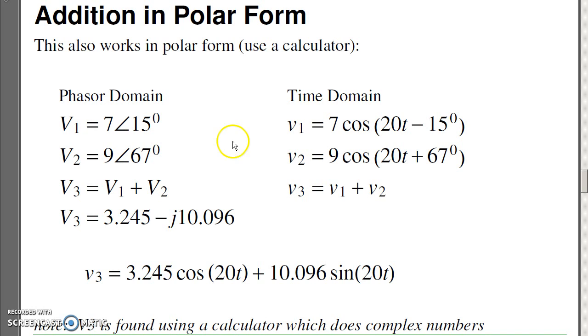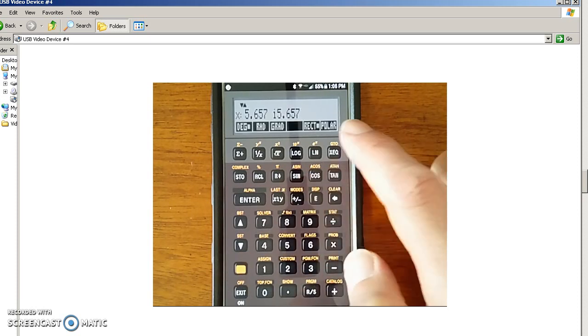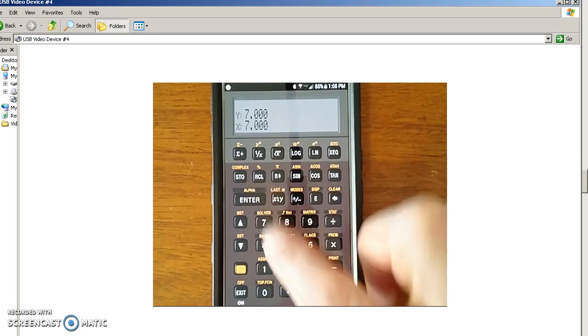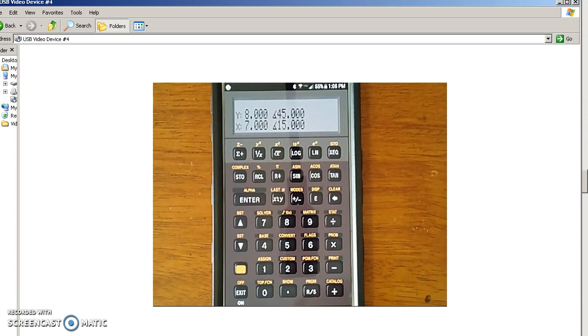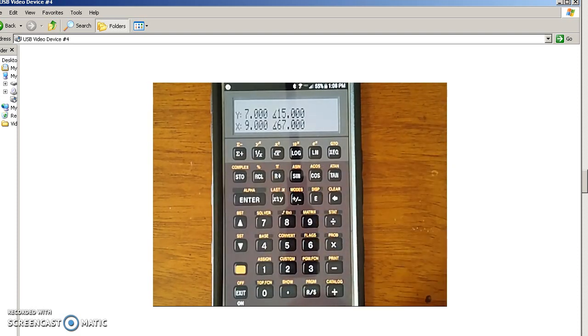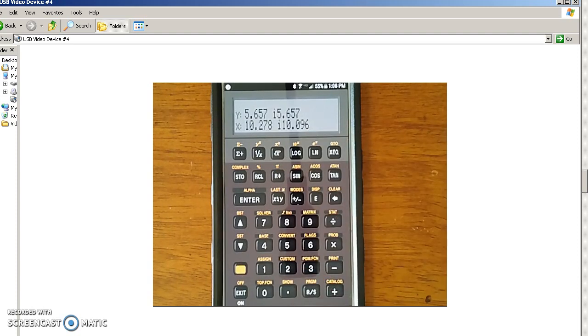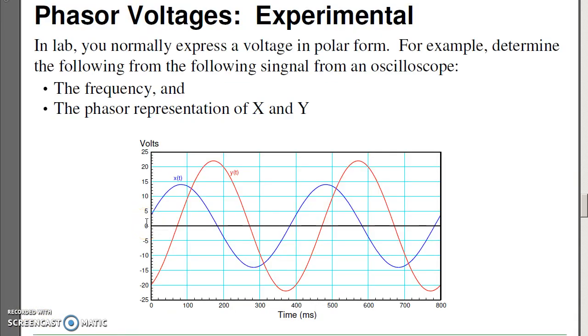It also works in polar form. In polar form, I would add 7 at minus 15 degrees plus 9 at 67 degrees. Add them together, you get a complex number. To illustrate, let's use an HP calculator. To input the number 7 at 15 degrees, I'll go to polar mode. I'll now enter 7, enter 15, there's 7 at 15 degrees. Add to it 9 at 67 degrees. 9, enter 67. And now add. There's your answer. If I want to go back to rectangular form, voila. So I can add subtract phasor voltages.